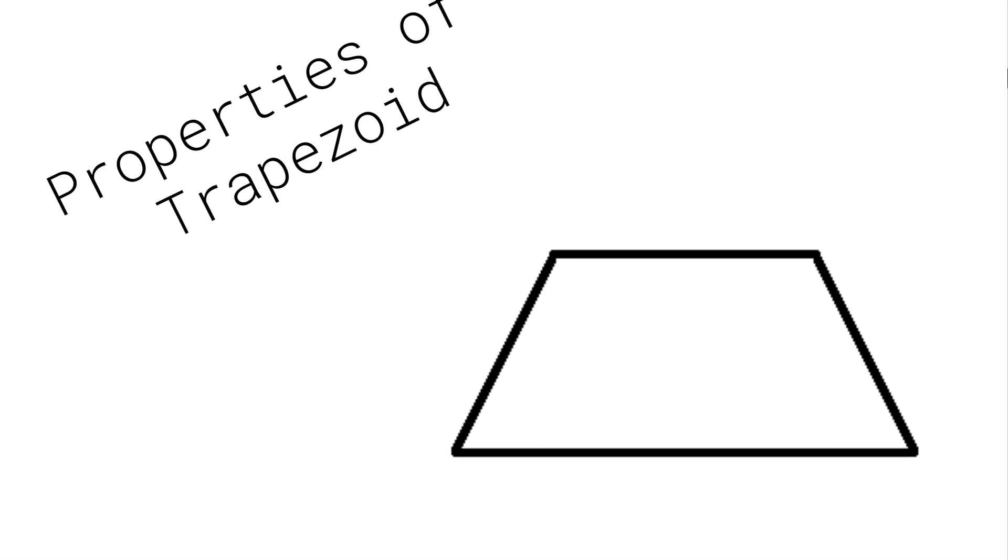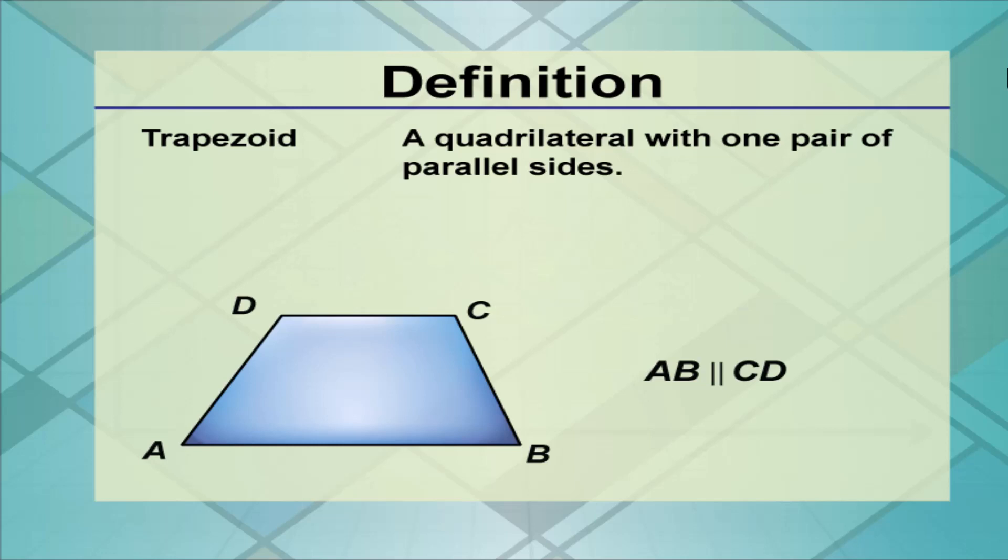What's up guys, it's Reese here, and today we're going to be going over the properties of a trapezoid. Now the definition of a trapezoid is a quadrilateral with one pair of parallel sides.